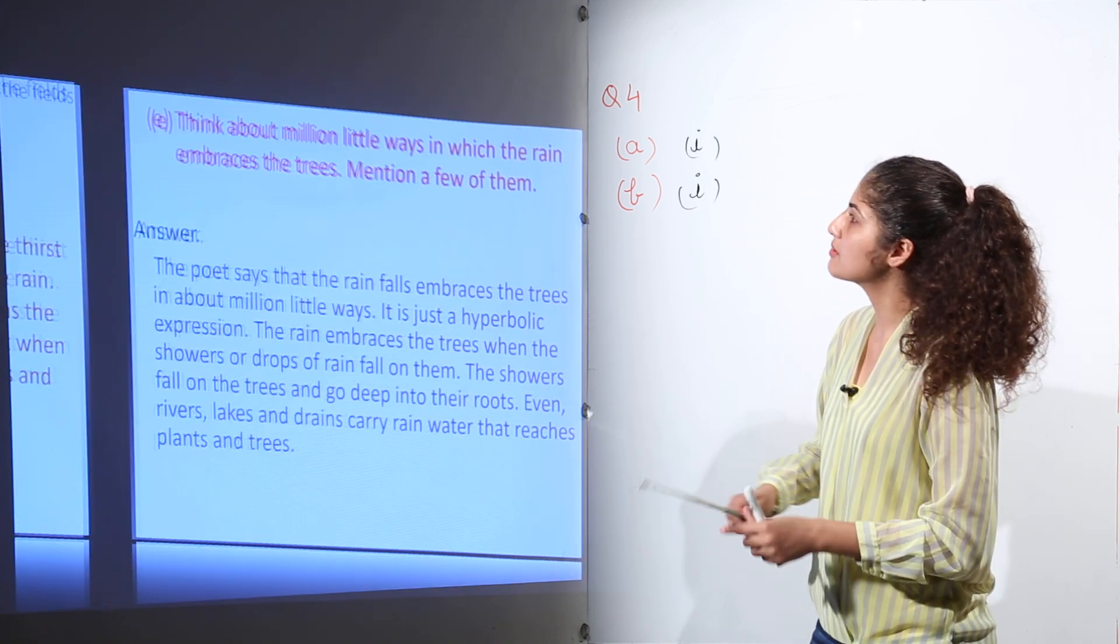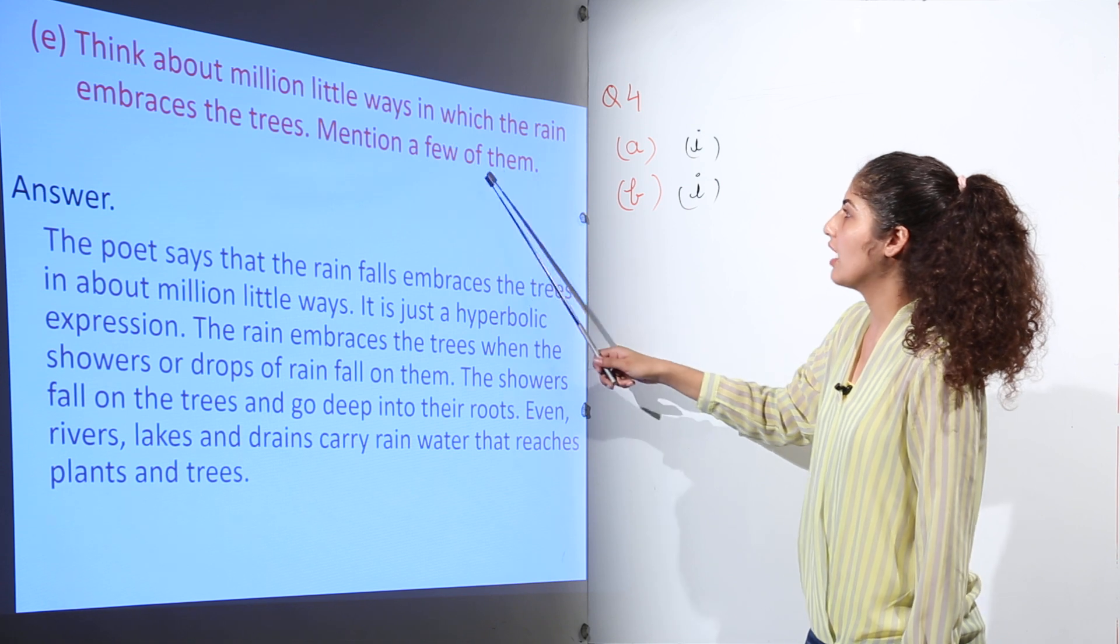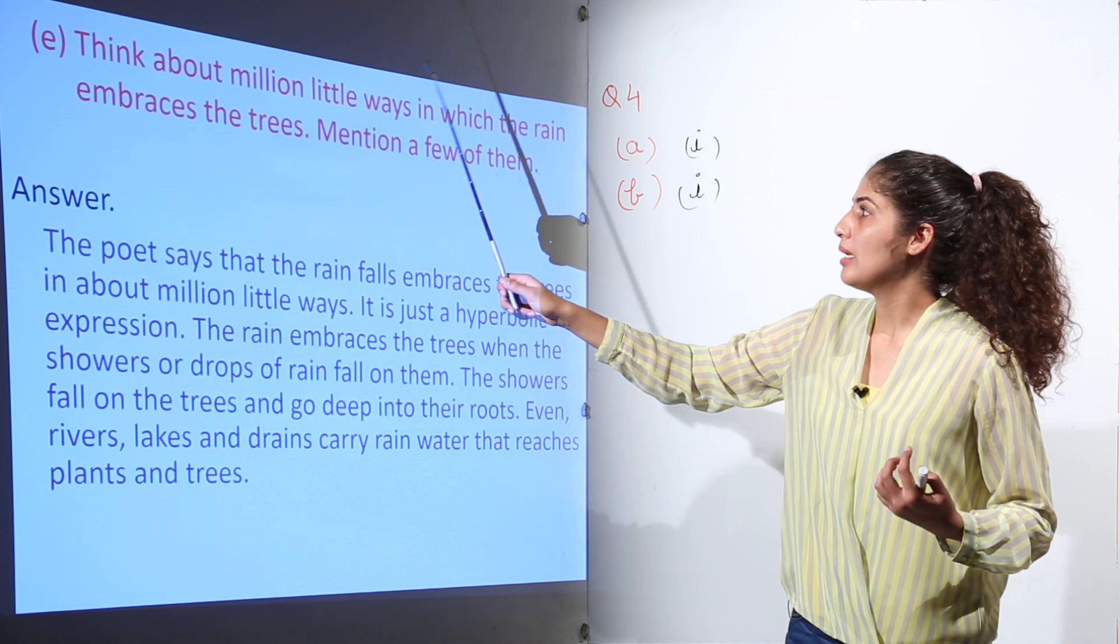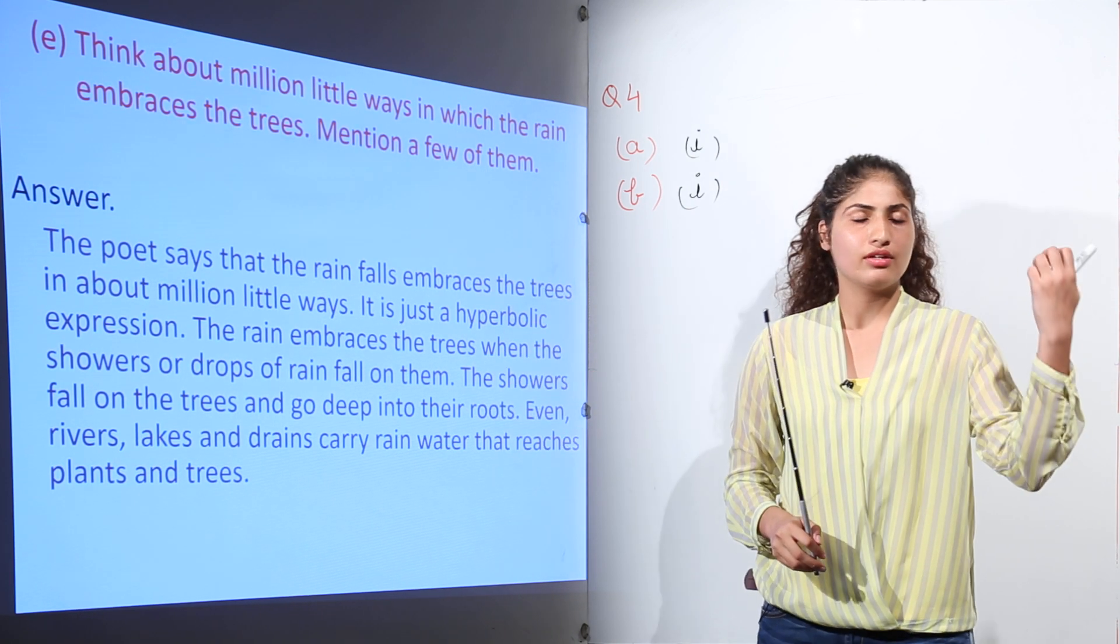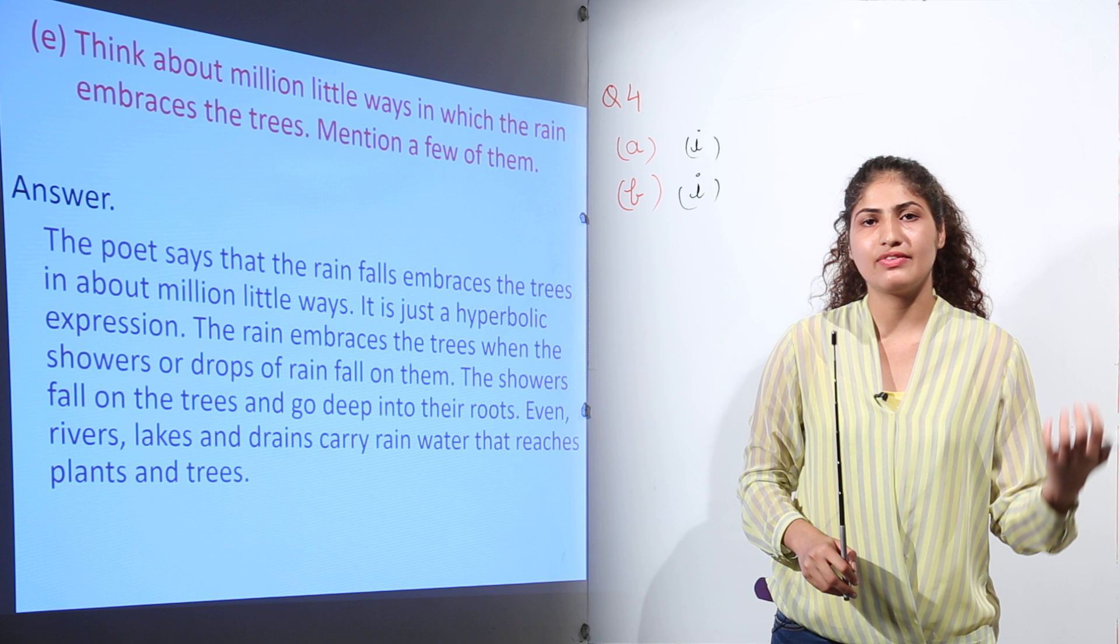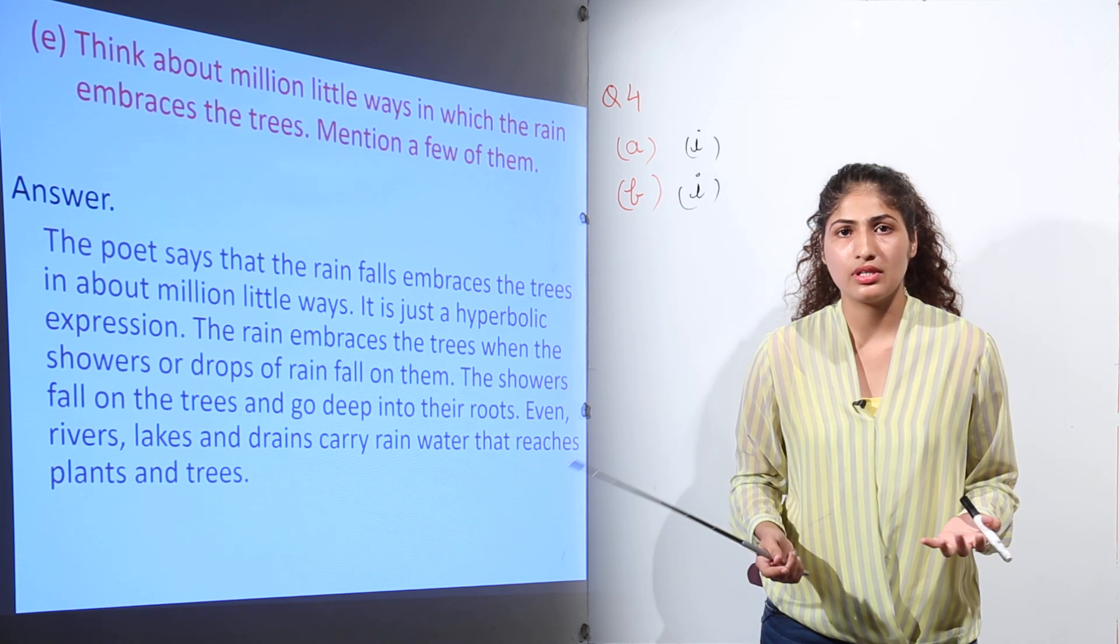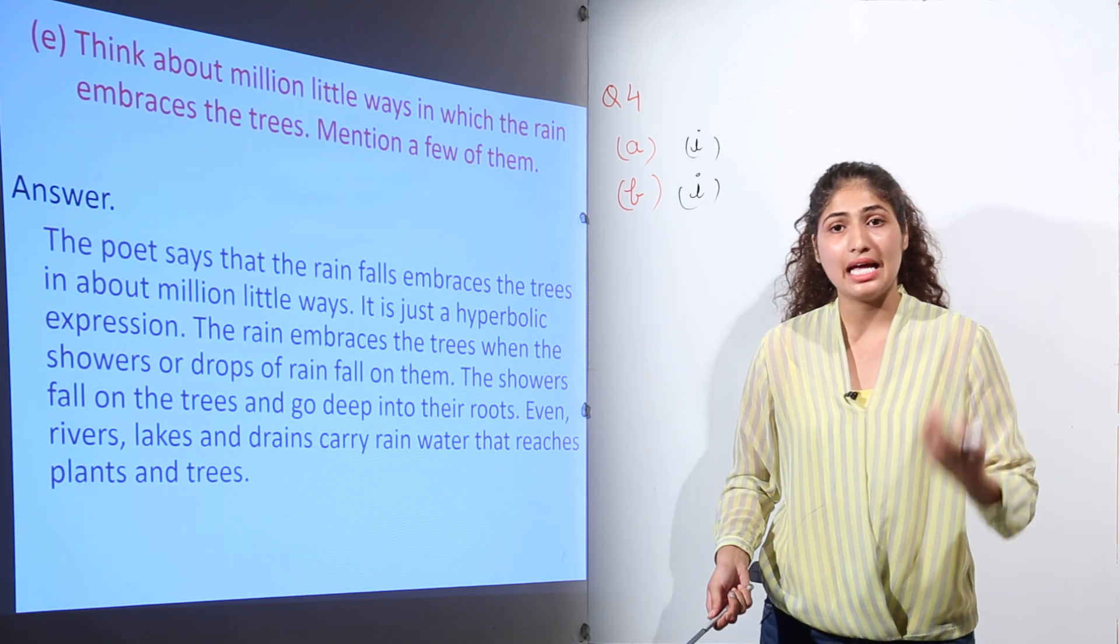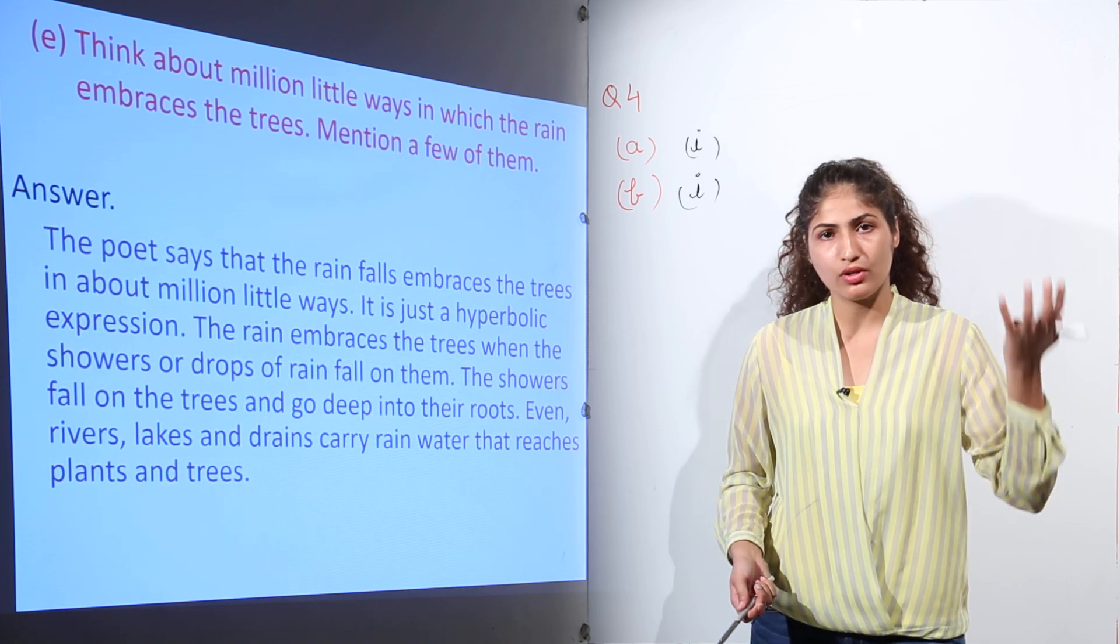Next question: Think about million little ways in which the rain embraces the trees. Mention a few of them. Each one of us knows that rain embraces the trees. When the rain falls on the vegetation, when rain falls on trees, they look very beautiful. Not only this, when the water reaches in the deeper roots of the trees, it helps, it provides it nourishment. So it helps in its proper growth.